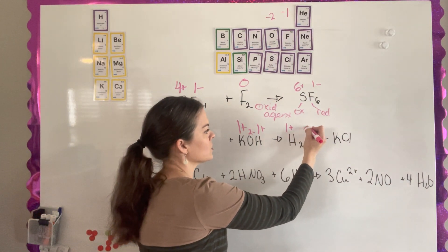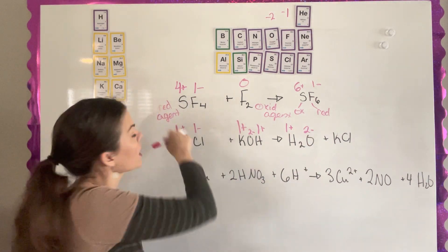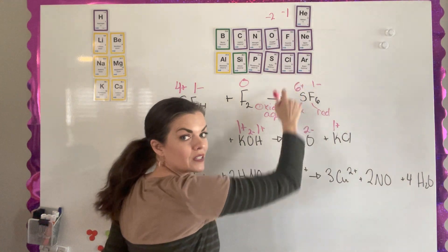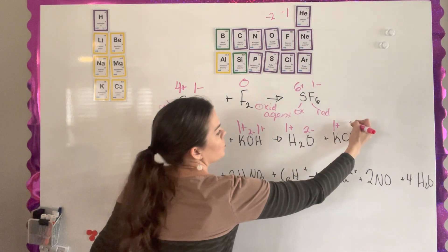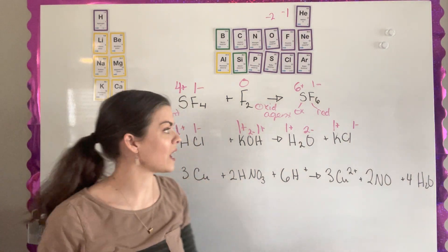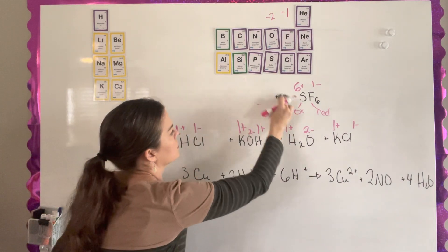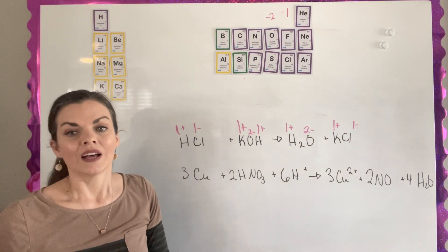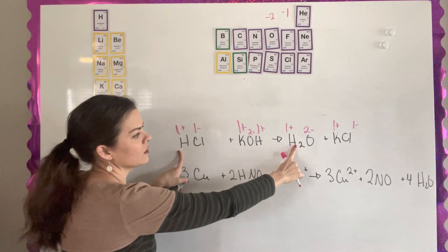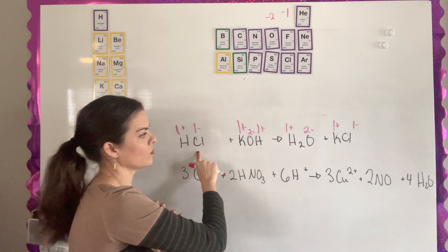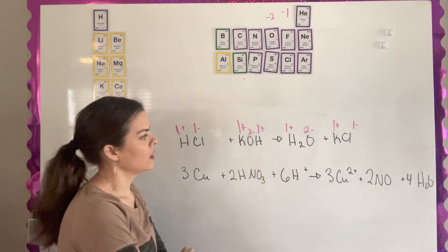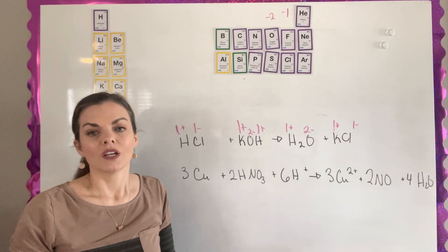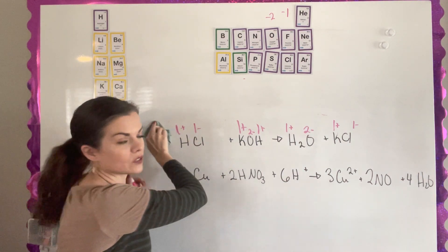For water, hydrogen is plus one and oxygen is negative two. For potassium chloride, it's ionic: potassium is plus one and chlorine (group 7) is negative one. Now checking if anything changes: hydrogen stays plus one throughout, chlorine stays negative one, potassium stays plus one, and oxygen stays negative two. Nobody is gaining or losing electrons, so this is not a reduction-oxidation equation.